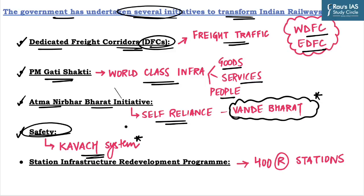You can quote the Kavach system while writing an answer on railway safety. The last initiative is the Station Infrastructure Redevelopment Program, under which 400 railway stations will be redeveloped through public-private partnership to create self-sustainable, technologically advanced, and passenger-friendly stations. In conclusion, there is a need to expand indigenous manufacturing and corporatize core functions, focus on revenue generation by prioritizing freight revenue, and expedite the operationalization of DFCs to enhance overall revenue for Indian railways.